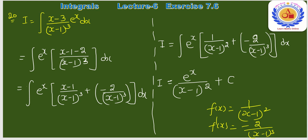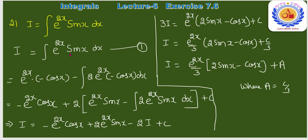Question number 21: ∫e²ˣ·sin(x)dx। e²ˣ को first function, sin(x) को second लेते हैं। Formula apply: e²ˣ·(−cos x) − ∫2e²ˣ·(−cos x)dx = −e²ˣ·cos x + 2∫e²ˣ·cos x dx।